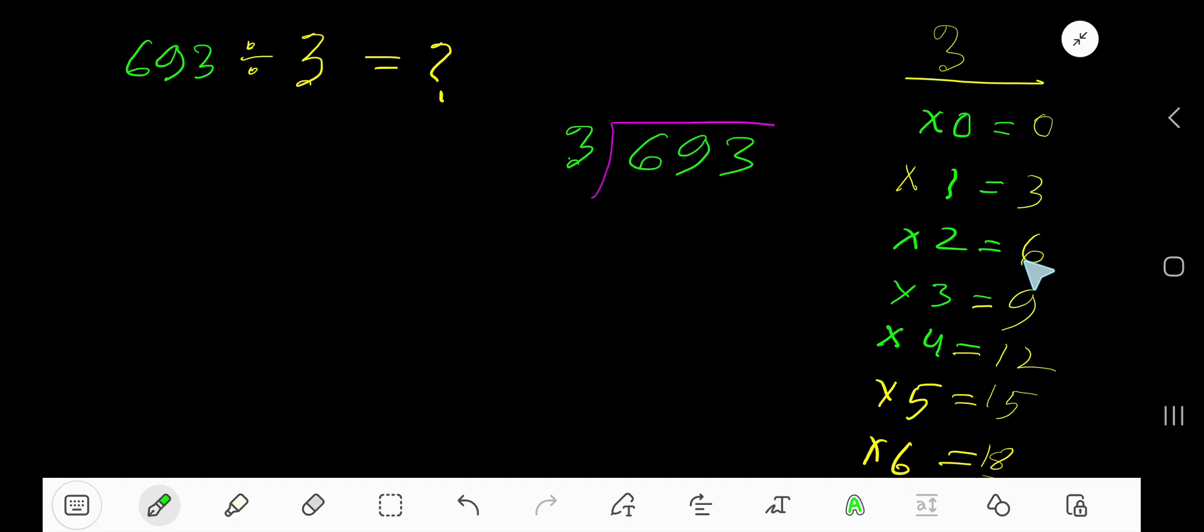3 goes into 6 how many times? 2 times. 2×3=6, subtract 0. Bring down 9. 3 goes into 9 how many times? 3 times. 3×3=9, subtract 0.